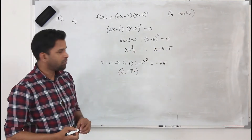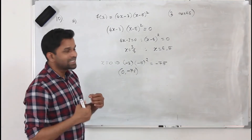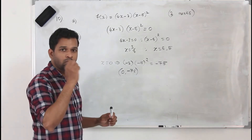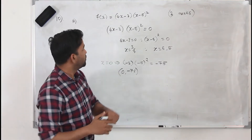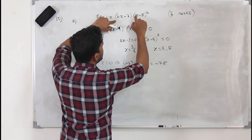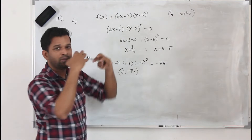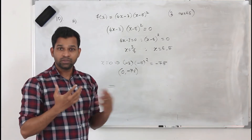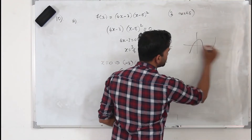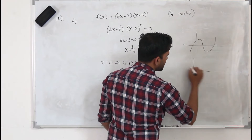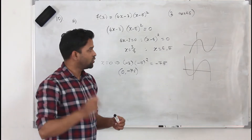We now have all the points. Before sketching the curve, there is one more very important point: you need to pay attention to the coefficient of x cubed. When you expand, 4x times x squared gives 4x cubed. The coefficient of x cubed is positive 4. So we know our curve will have a positive cubic shape. If it were negative, the curve would be upside down. Always pay attention to the coefficient of x cubed.